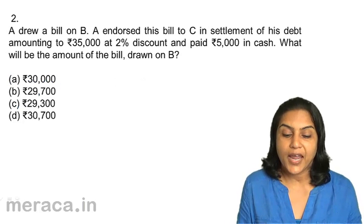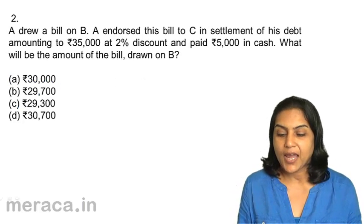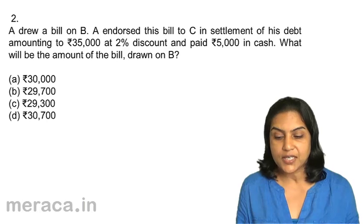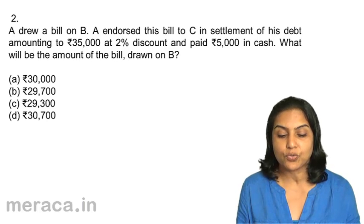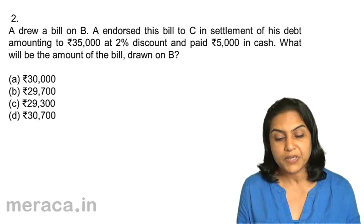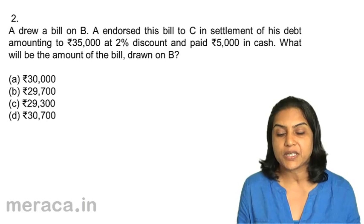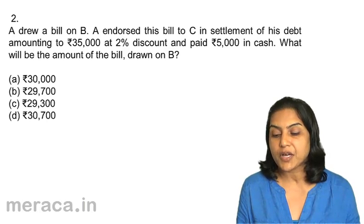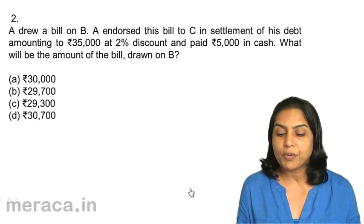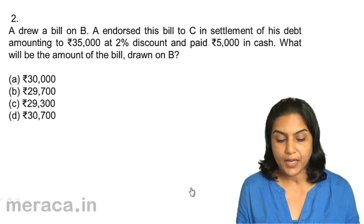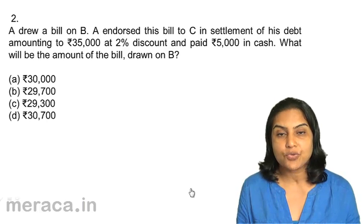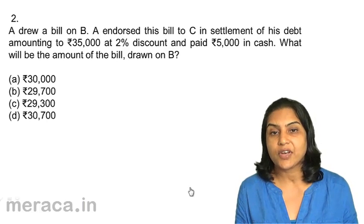Question 2: A drew a bill on B. A endorsed this bill to C in settlement of his debt amounting to $35,000 at 2% discount and paid $5,000 in cash. What will be the amount of the bill drawn on B? A. $30,000, B. $29,700, C. $29,300, D. $30,700.